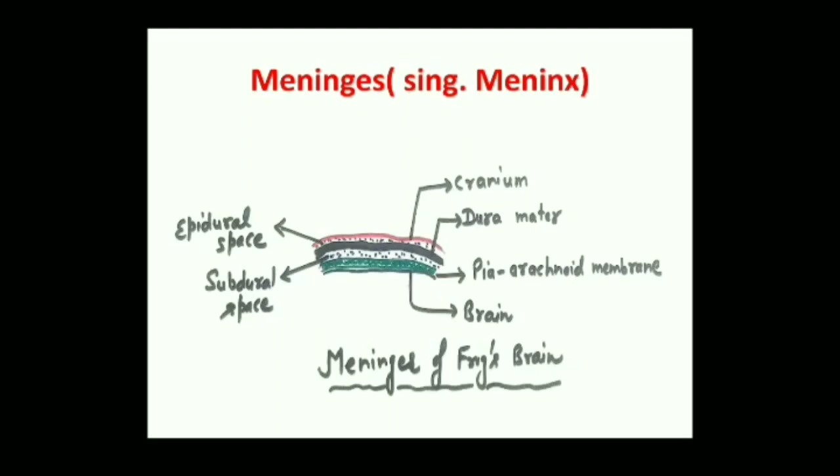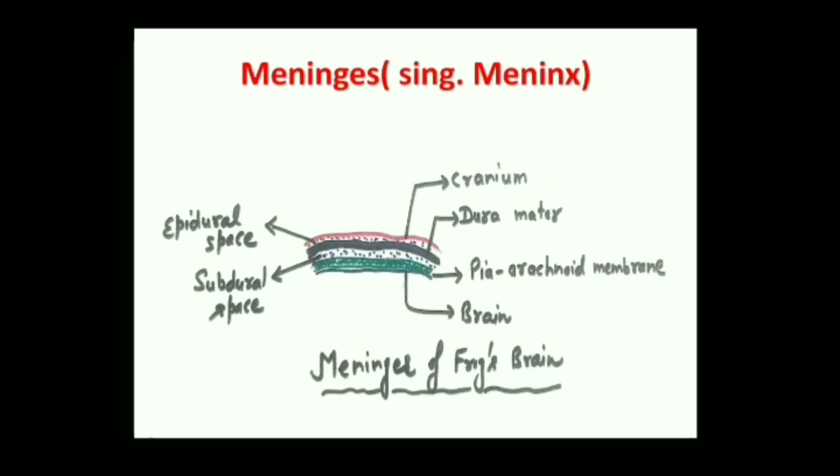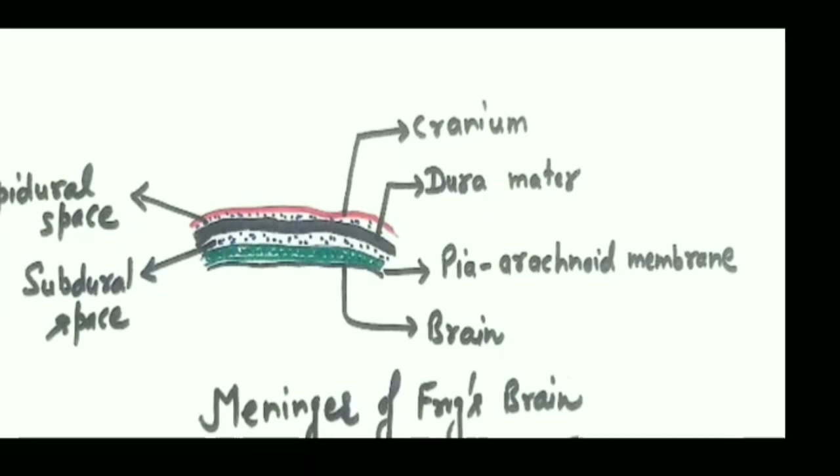First of all, you should know what the meninges are. The brain is a delicate but very important organ of the body, and since it is the most important organ, it needs protection. The protective layers around it are called meninges. The brain is present inside the cranium or brain box, which is the part of the skull — the hard structure which covers the brain. Just inside the cranium, there are meninges; the singular is meninx.